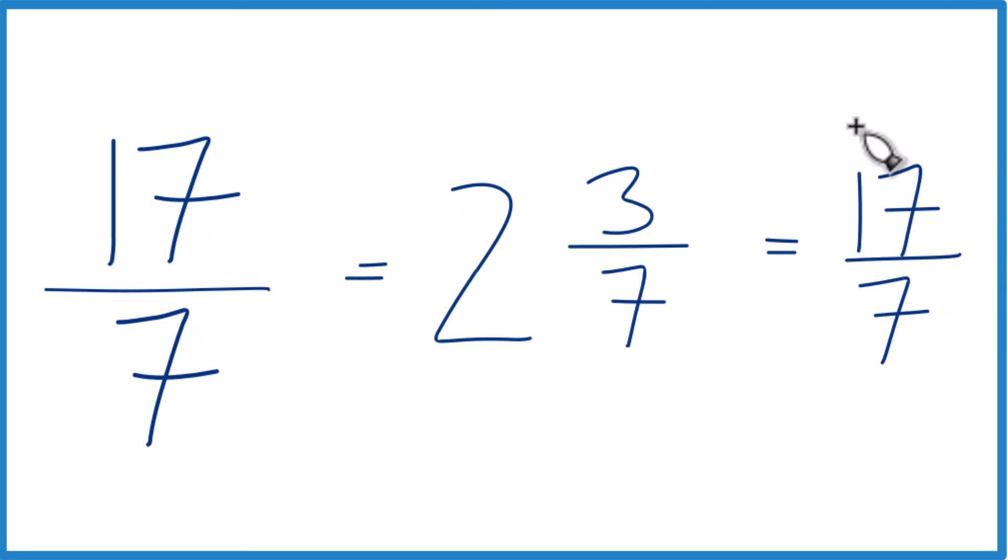So the improper fraction 17 sevenths, that's equal to the mixed number 2 and 3 sevenths. This is Dr. B, and thanks for watching.